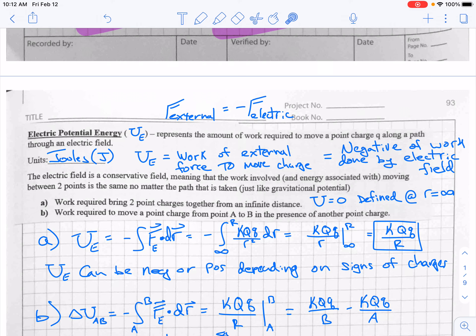So when you carry out this integration, you get a nice simple result, KQQ over R. If the two charges are positive or negative, if they have the same sign, if Q and Q are the same, both positive or both negative, then this entire work term, this entire energy term becomes positive. And that should make sense because if you're bringing in two positive charges together, they want to repel each other. So you have to push them together and you're moving them together. So you're pushing in the direction of motion. That's positive work.